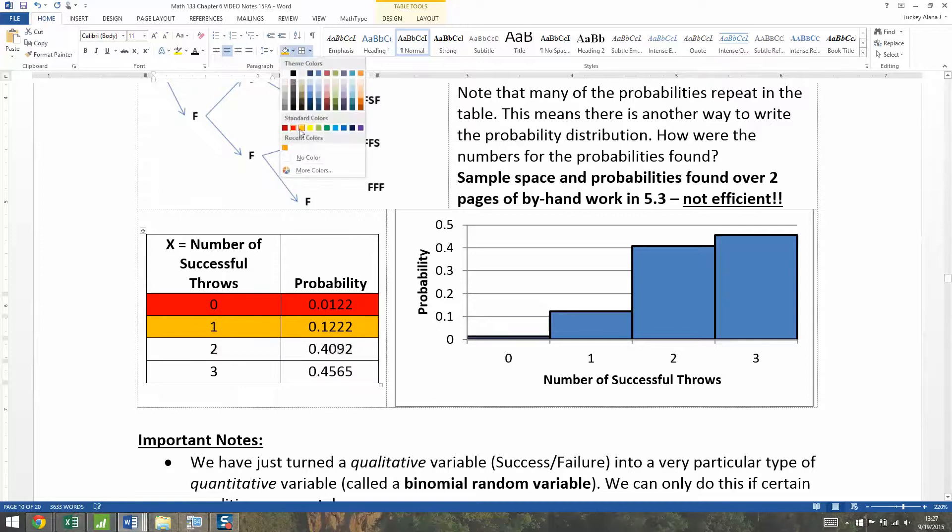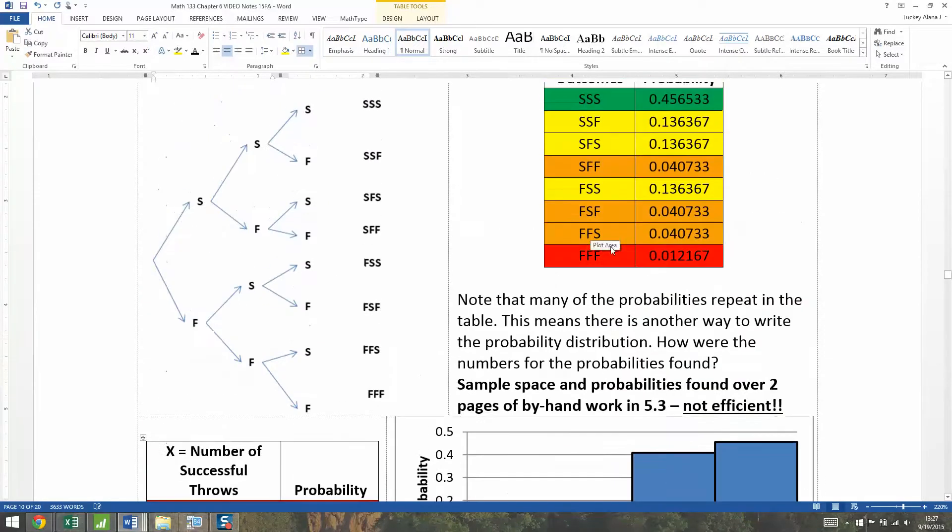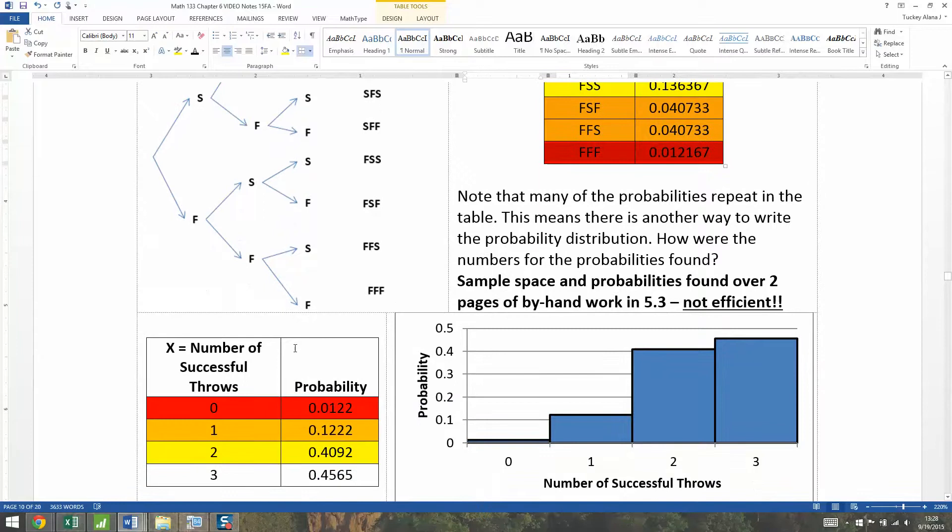Zero successes would be the equivalent of fail, fail, fail. So it's in red right here. Fail, fail, fail, point zero, one, two, one, six, seven - 0.0121667.